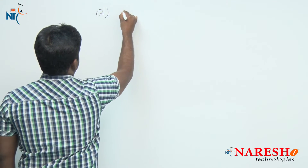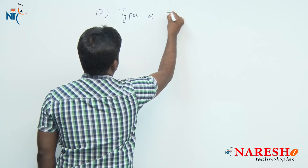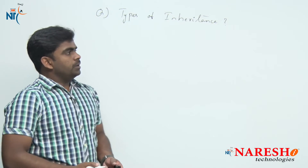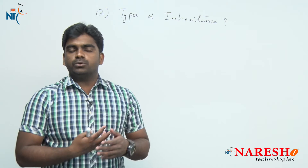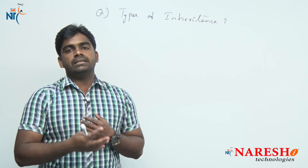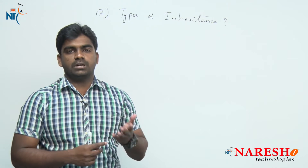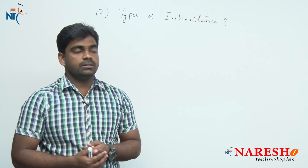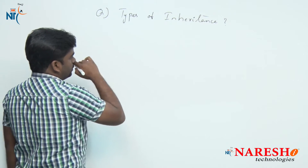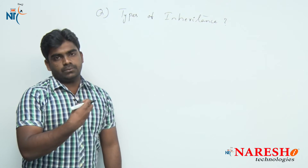The question is: what are the types of inheritance? Object oriented programming supports many inheritance concepts, but Java supports only a few. What are those, and why is Java not supporting the remaining ones? I am using the terminology parent and child to understand very clearly.